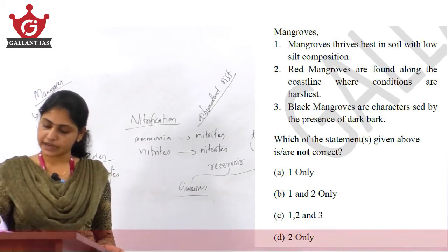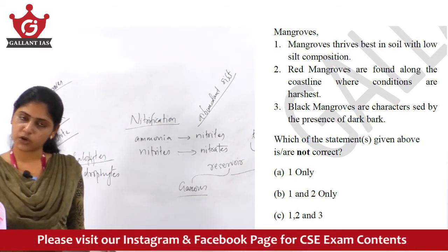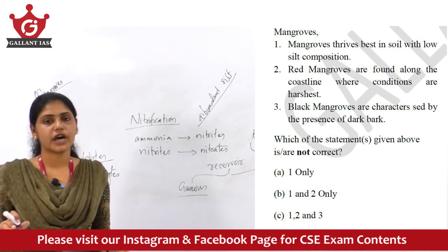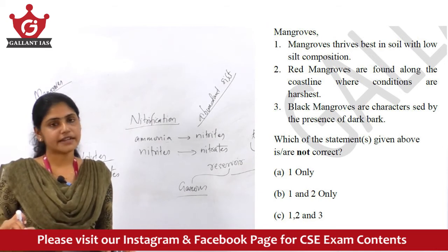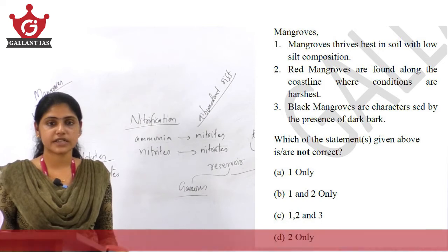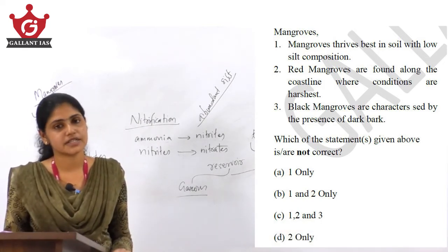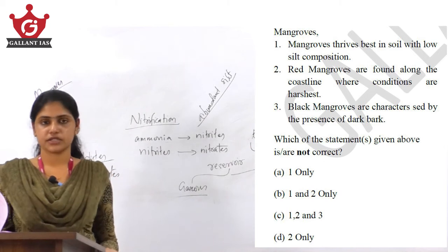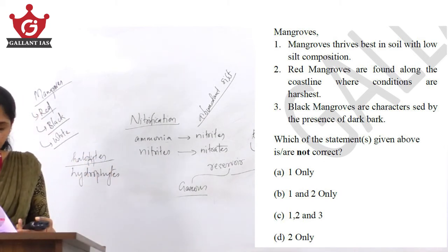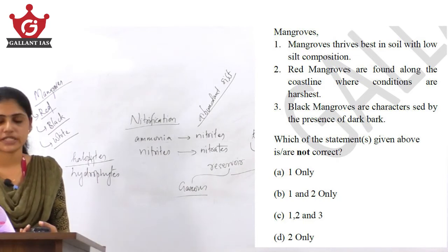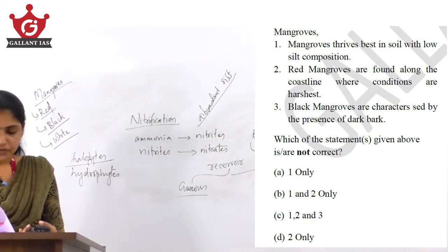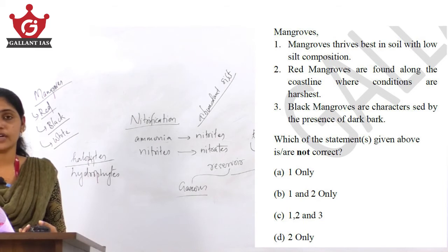The second and third statements are correct. Red mangroves are found along the coastline where conditions are harshest, and black mangroves are characterized by dark bark. Only the first statement is incorrect, so the answer is A — one only. If you know the types of mangroves, you can eliminate options B, C, and D and arrive at A.